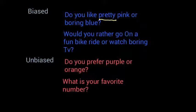I'm going to underline the part that makes the biased questions biased. You'll notice what I'm underlining is: pretty, boring, fun, and boring — and those are all adjectives. An unbiased question is not going to have any adjectives to get people to feel one way or another. Do you prefer purple or orange? — it's just a question and people can answer how they choose. But when you ask do you like pretty pink or boring blue, you're trying to get people to say pink. So to be unbiased, just don't have any adjectives in your question.